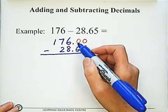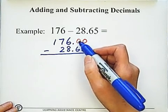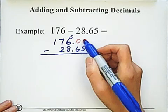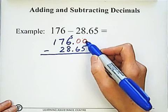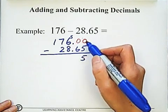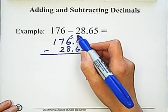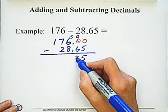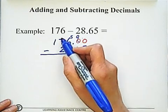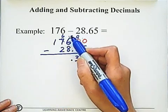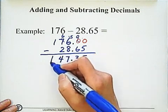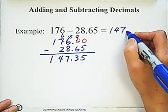0 minus 5 - we need to borrow 1. This digit is also 0, so we need to borrow from 6, which becomes 5. So this is 10 minus 5 equals 5. After borrowing, this digit becomes 9, so 9 minus 6 equals 3. Here's the decimal point. But 5 is smaller than 8, so we need to borrow 1 from 7. This becomes 6, so we have 15 minus 8 which is 7. Then 6 minus 2 equals 4, and we have 1 here. So the answer is 147.35.